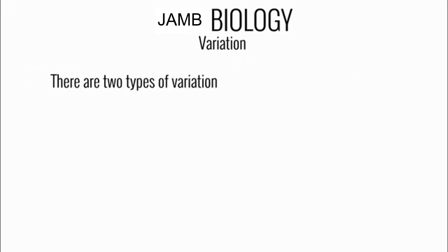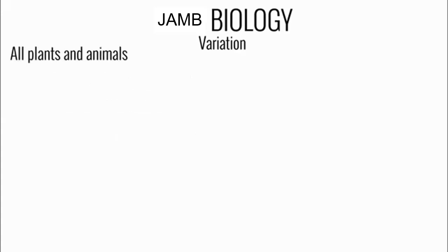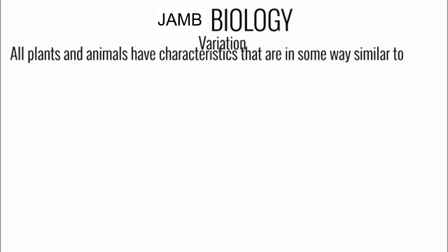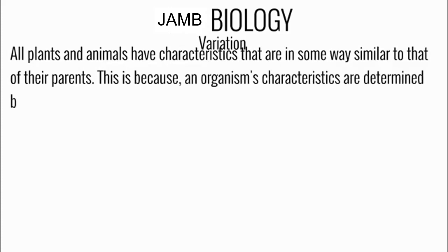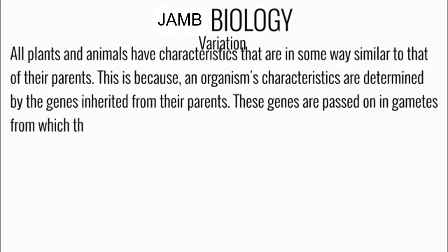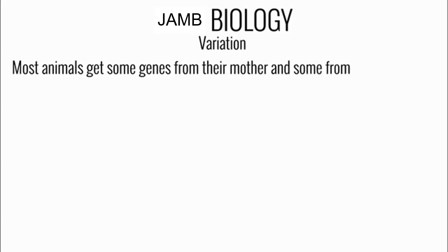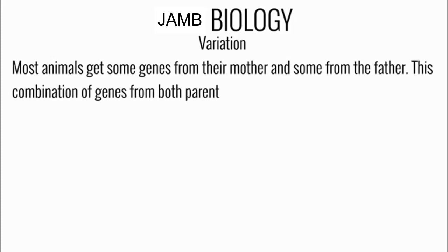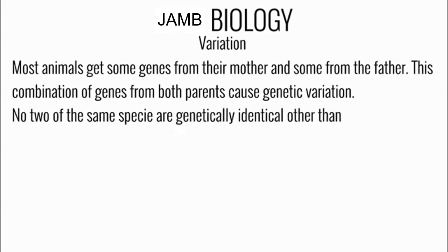There are two types of variation: genetic variation and environmental variation. All plants and animals have characteristics that are in some ways similar to that of their parents. This is because an organism's characteristics are determined by the genes inherited from their parents. These genes are passed on in gametes — the sex cells from which organisms develop. Most animals get some genes from their mother and some from the father, and this combination of genes from two parents causes genetic variation. No two of the same species are genetically identical, other than identical twins.